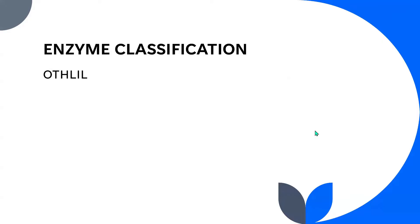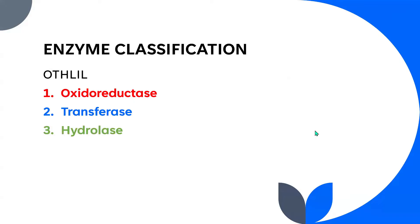We abbreviate them as OTHLIL. The O stands for oxidoreductase, T for transferase, H for hydrolase, L for lyase, I for isomerase, and the last L is ligase. These are the six enzyme classifications.